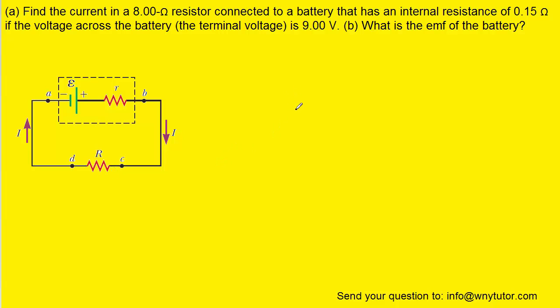And in order to do that, we can turn to Ohm's Law, which tells us that the potential difference across the resistor is equal to the current that flows through it times the resistance.